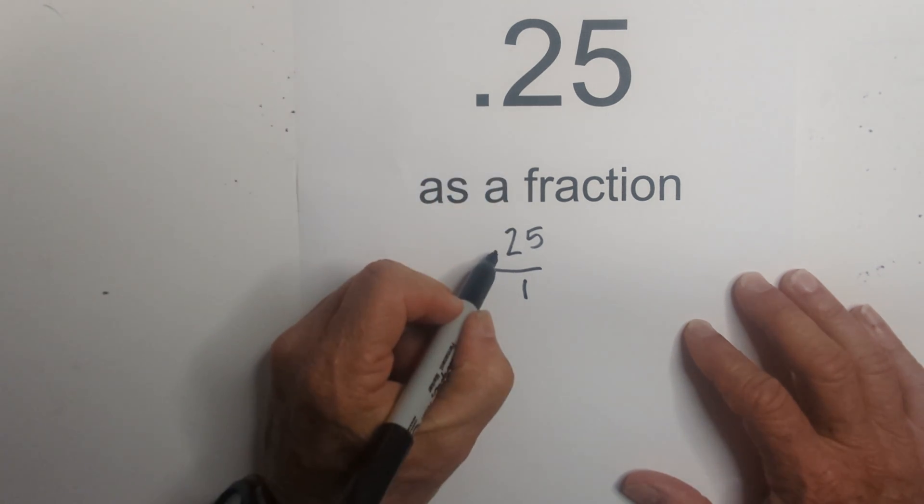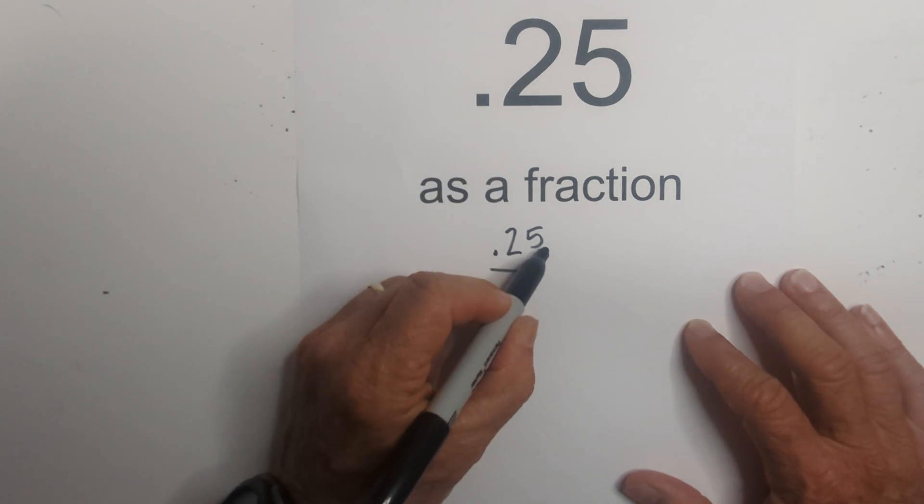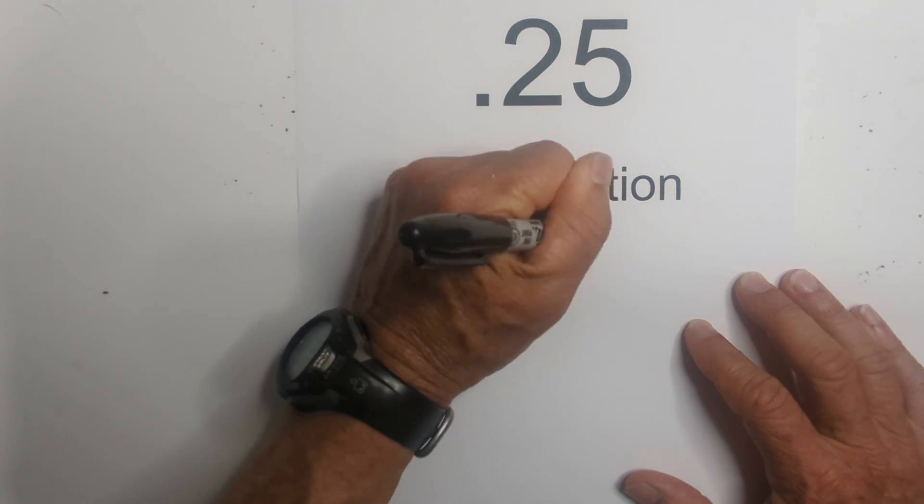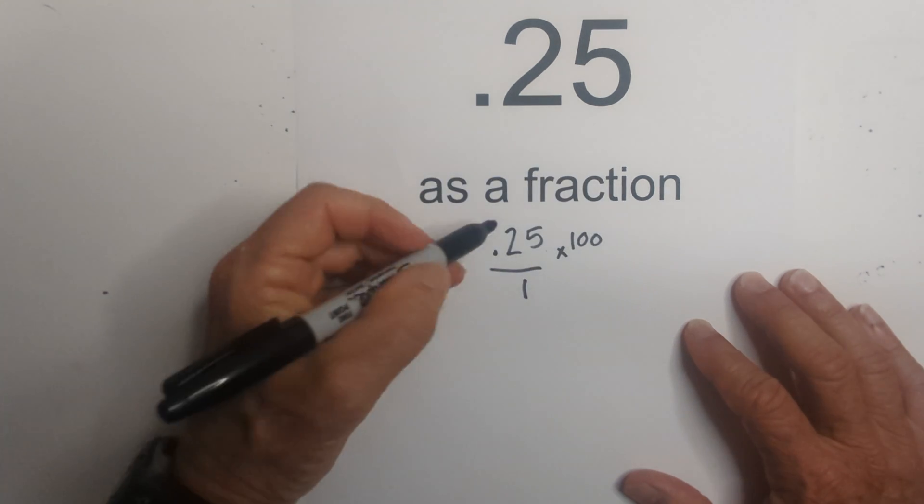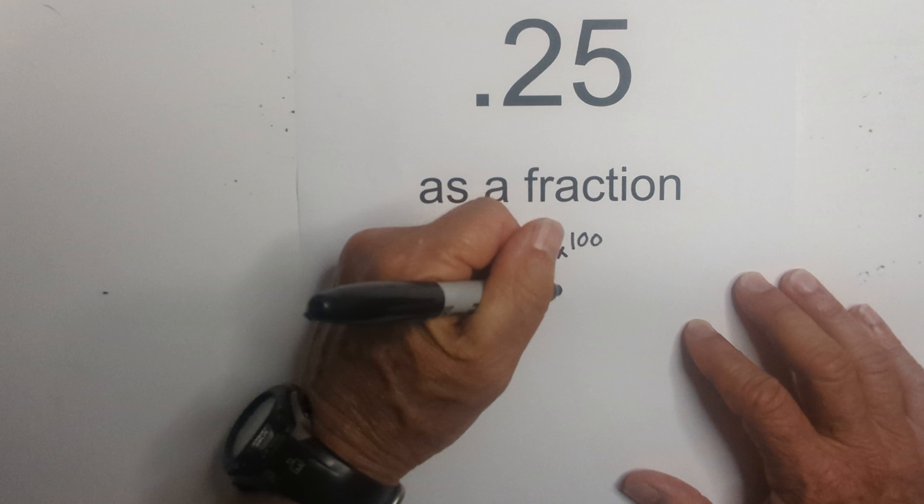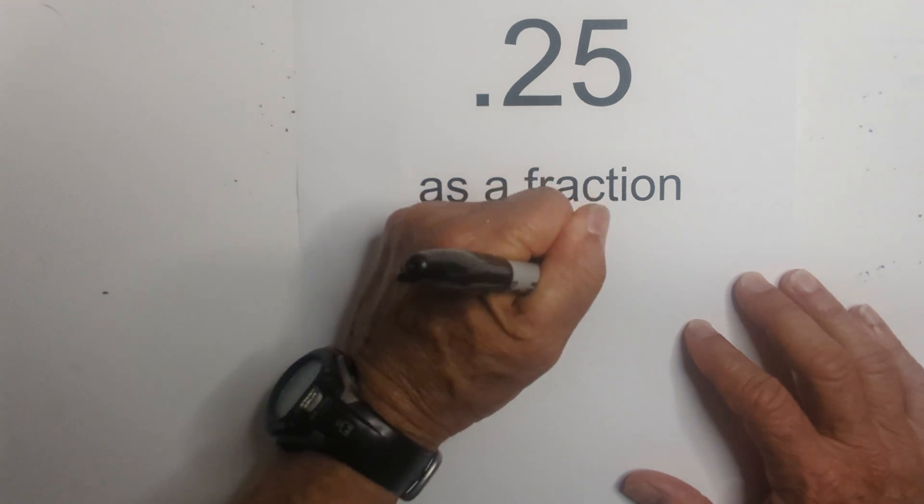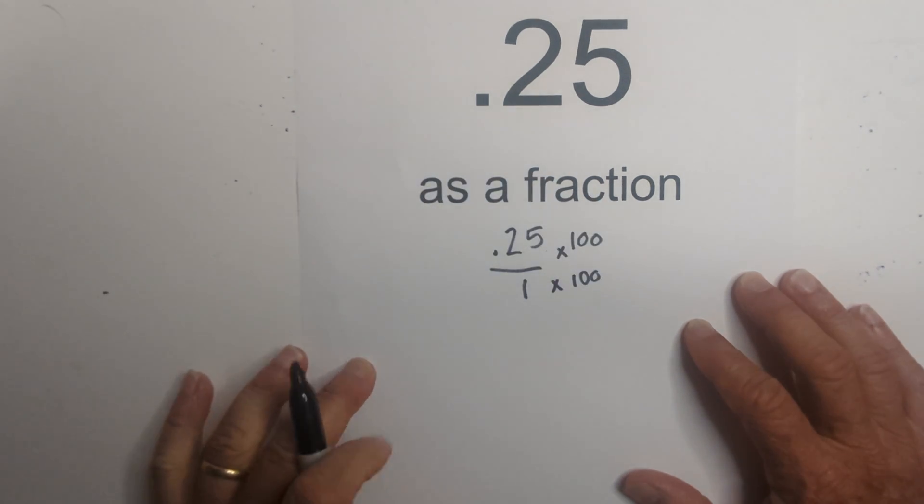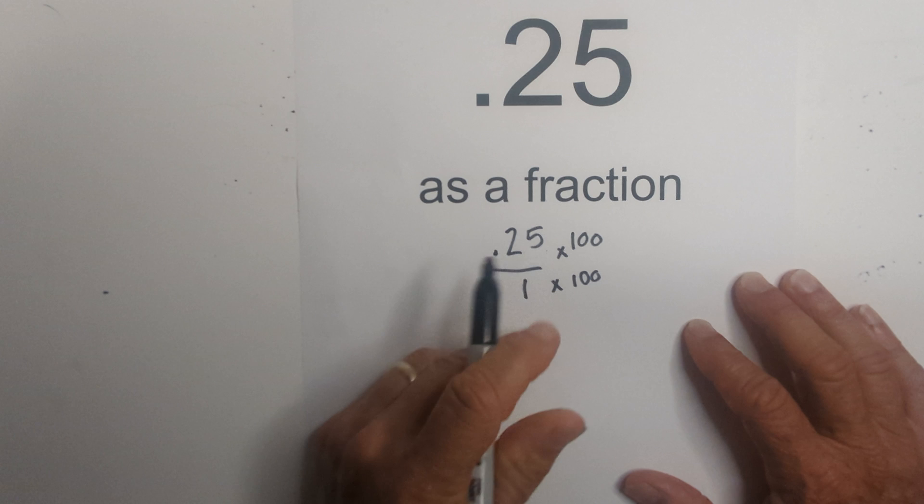So I need to move the decimal one, two places to the right, so I can multiply it by 100. What I do to the top or bottom, or the numerator and denominator, I need to do the same to both, so I will also multiply the 1 by 100.